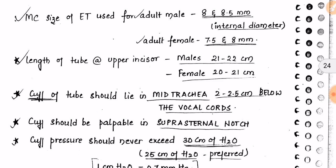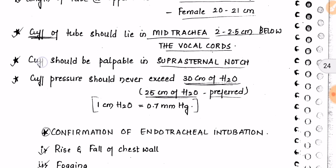Push the tube 2 to 2.5 centimeters below the vocal cords. The cuff should be palpable at the suprasternal notch. Cuff pressure should never exceed 30 centimeters of water — preferably we use 25 centimeters. Note: 1 cmH₂O equals 0.7 mmHg, so 30 cmH₂O is approximately 21 mmHg.